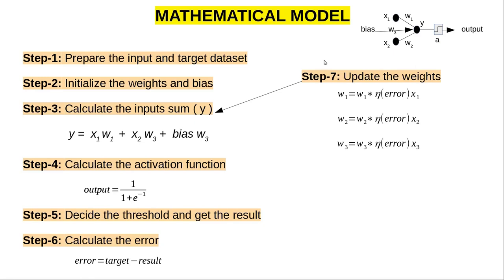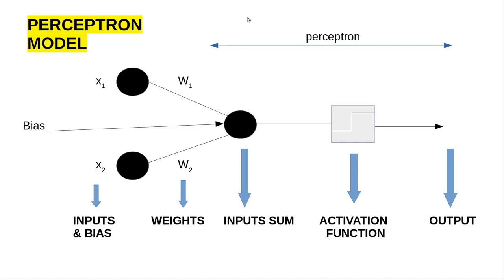We should prepare our inputs and what targets we want to get — for example, one or zero or any number. Step two: initialize the weights and bias. x1 and x2 you already know because these are your inputs from your dataset. But how do we get w1 and w2? We can't get them directly, and we also don't know the bias, so we assign random numbers — you can start with zero, one, or any random number.